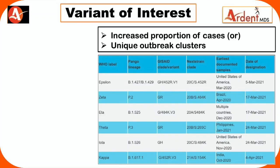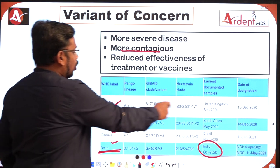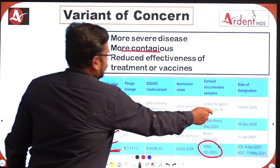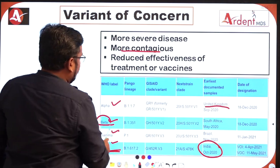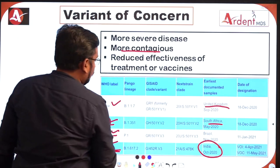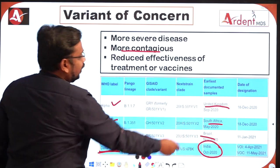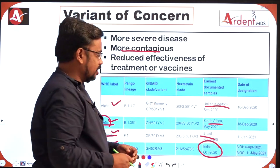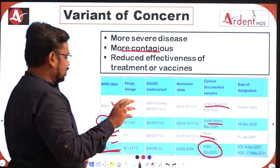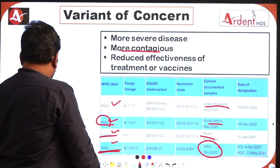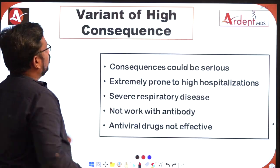Coming to Variant of Interest common in India: it is Kappa. So if asked about Variant of Interest in India, the answer is Kappa; for Variant of Concern it is Delta. Alpha is present in UK, Beta variant is in South Africa, and Gamma variant is in Brazil. The first documented case of Delta was in India.